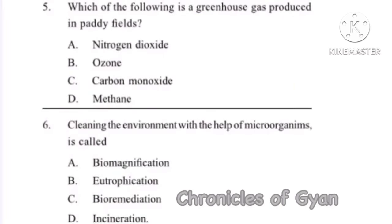Question 5: Which of the following is a greenhouse gas produced in paddy fields? The correct option is Option D, methane. Methane is responsible for around 30% of the rise in global temperature.